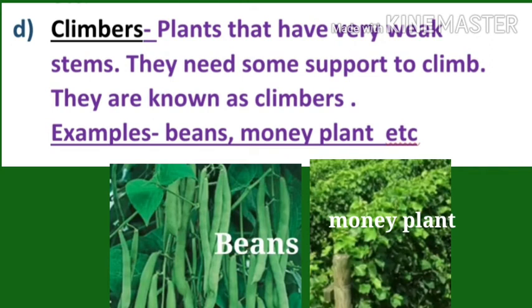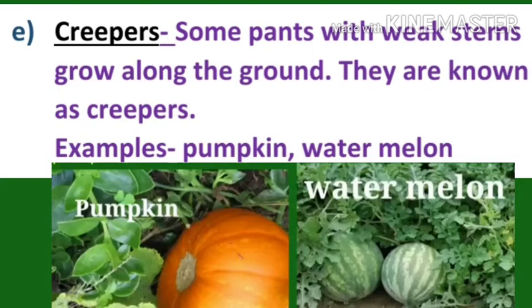Examples of climbers: beans, money plant, etc. Number E: Creepers. Some plants with big stems grow along the ground. They are known as creepers. Examples: pumpkin, watermelon.